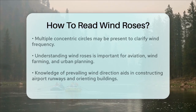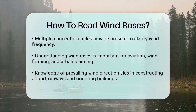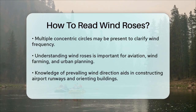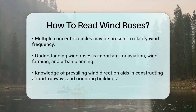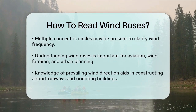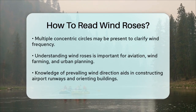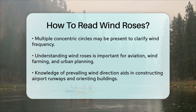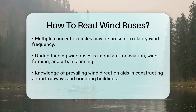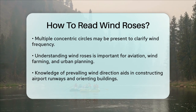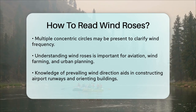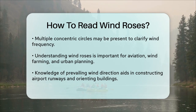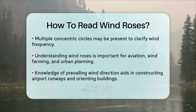Wind roses can also have multiple concentric circles. These circles help show the frequency of winds more clearly. The closer to the center, the lower the frequency, and the further out, the higher the frequency.